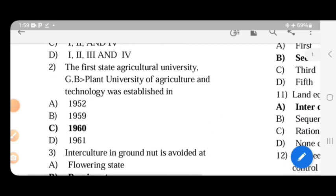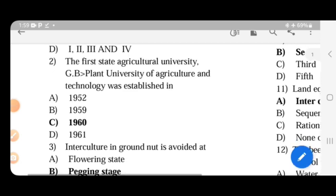Next. The first state agricultural university is G.B. Pant University of Agriculture and Technology, established in 1960 at Pantnagar, India.